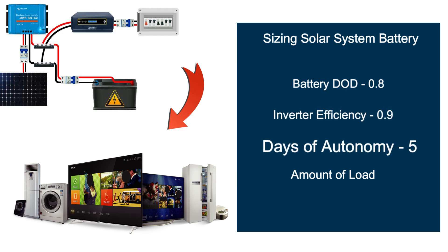Three, days of autonomy — the number of days your inverter system can run and sustain without charging it. Two to three days is considered the standard for battery sizing. But if you're here in Nigeria and you're not tied to the 24-hour grid, consider increasing your days of autonomy to five days or even one week, since sometimes you can have a total blackout for days or even weeks.